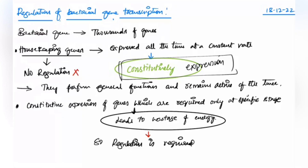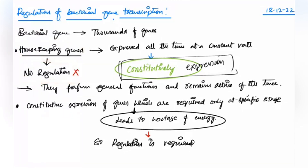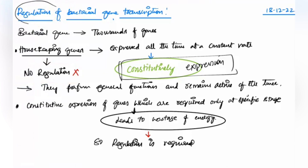Genes expressing constitutively are called housekeeping genes. Since they are expressed at all times, you need not do any regulation — regulation means controlling the capability of a gene to express. You need not control anything for these genes.